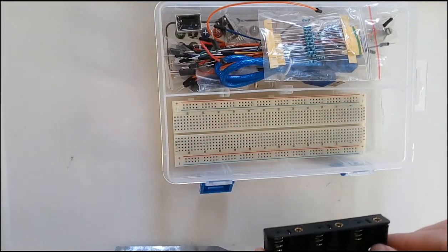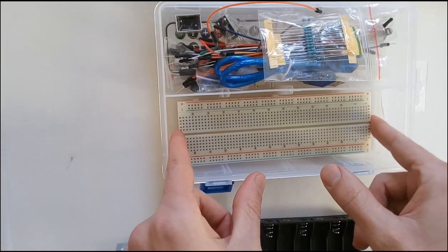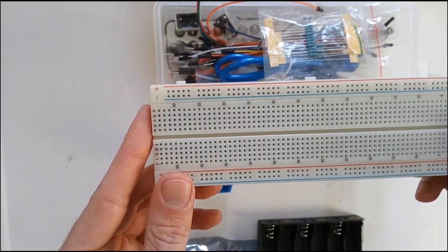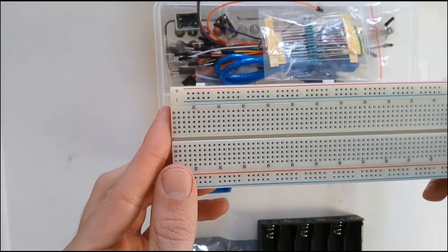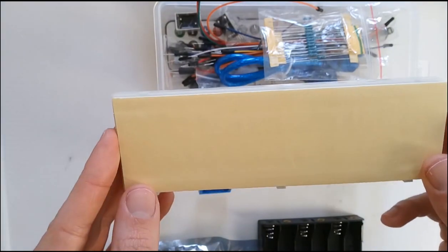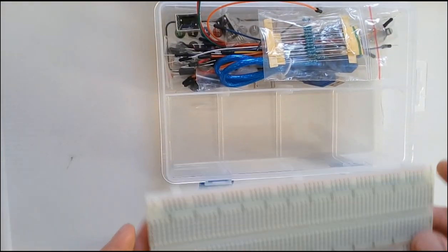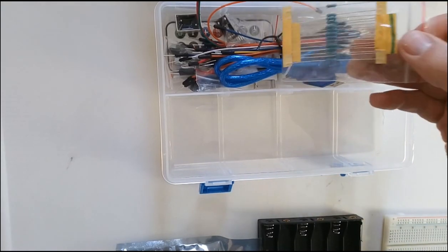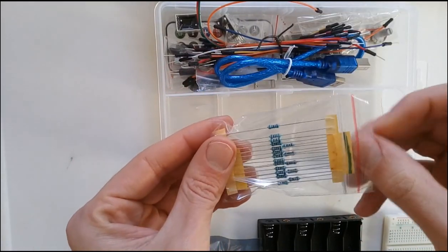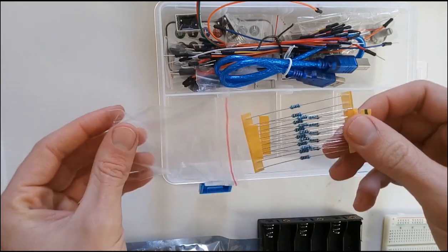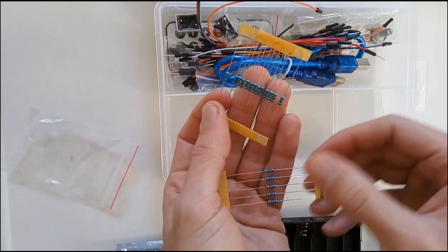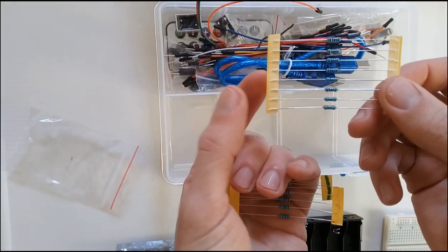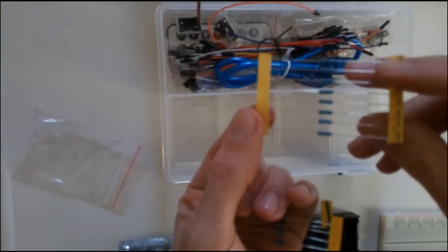We also have a big breadboard or protoboard, as well as a pack of resistors. The 220 ohm resistors come in a set of eight.